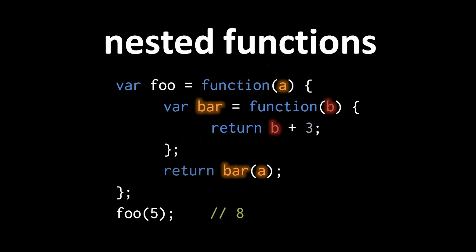Perhaps the biggest real difference between Pidgin and JavaScript is that in JavaScript we can nest functions — that is, we can put functions inside other functions. Here, for example, we're creating a function which we're assigning to the global variable foo, but then inside that function we're creating another function which we are assigning to the local variable bar. The most important thing to understand is which variables belong to which function. The rule is that a var statement declares a local variable for the function it is most immediately in.